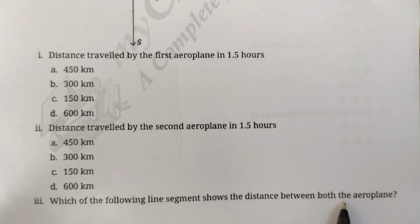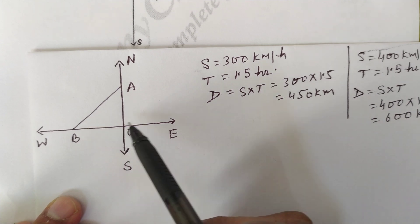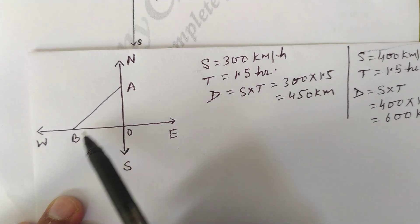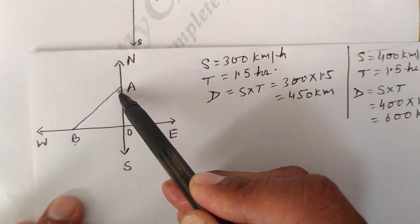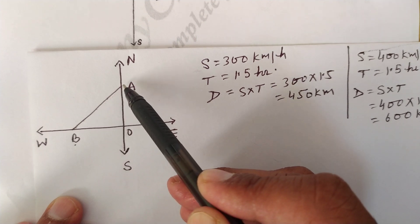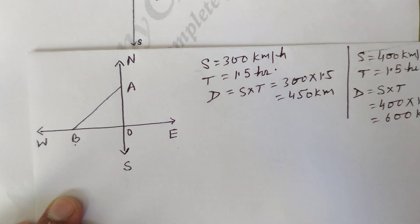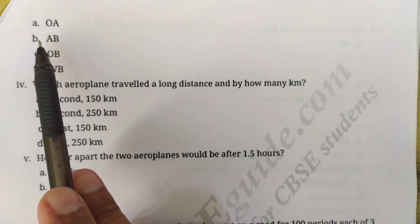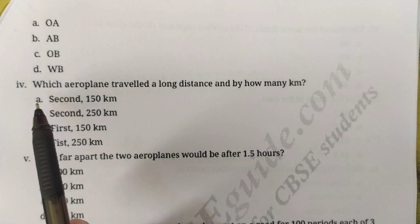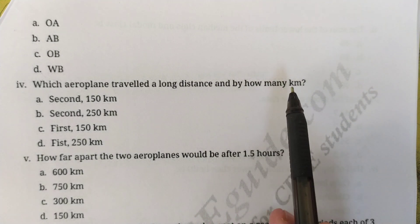The third question asks which line segment shows the distance between both aeroplanes. The first aeroplane is at point A and the second aeroplane is at point B, so the distance between them is AB. Option B — AB — is the correct answer here.